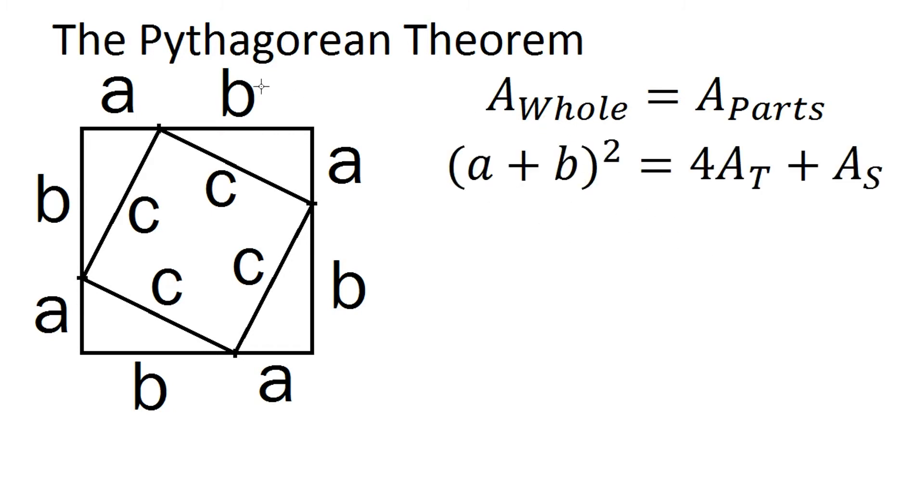The length of this side is a plus b, so (a + b) squared is the area of this whole square. And the area of the triangle multiplied by 4 is going to be the combined area of these four triangles plus the area of this smaller square inside, and these two parts are going to be equal.